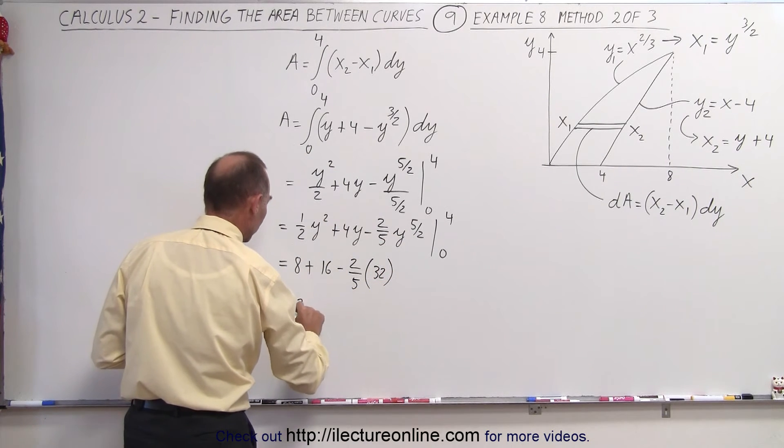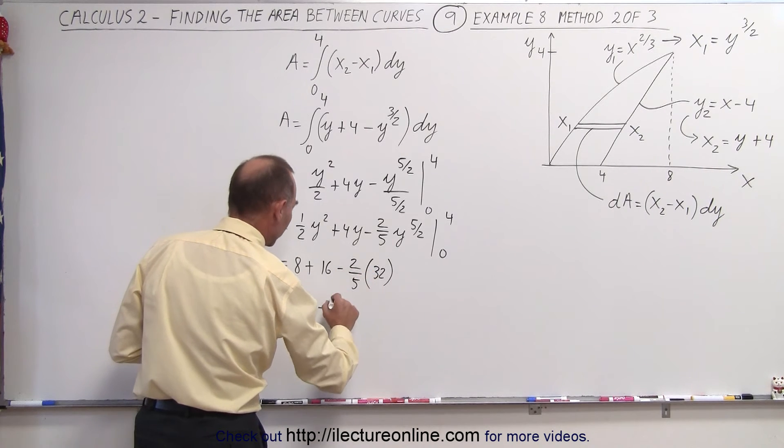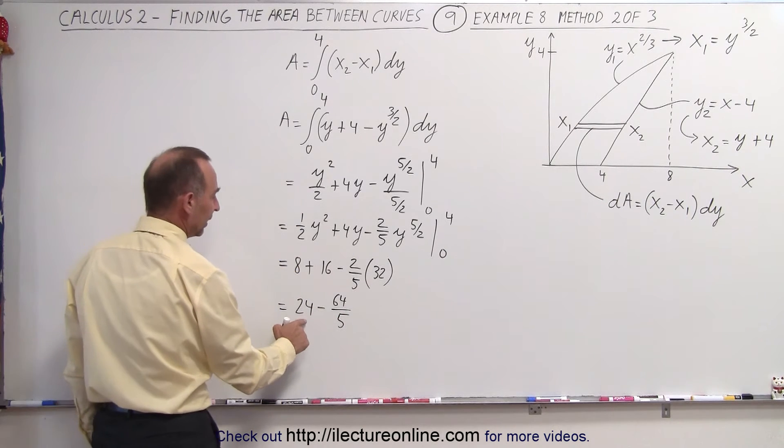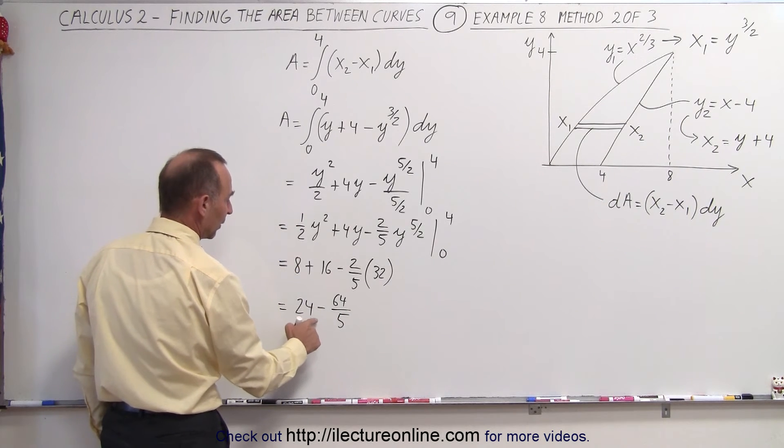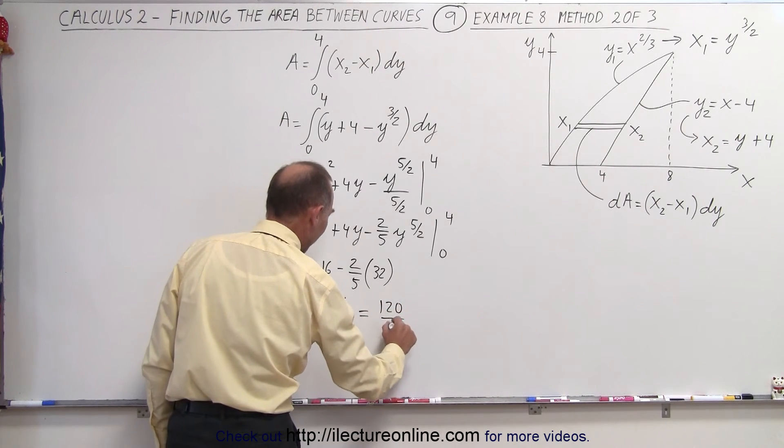And so this is equal to 24 minus 2 fifths that will be 64 over 5. And then if we write this over 5 so this becomes equal to 120 divided by 5 because 5 times 24 is 120.